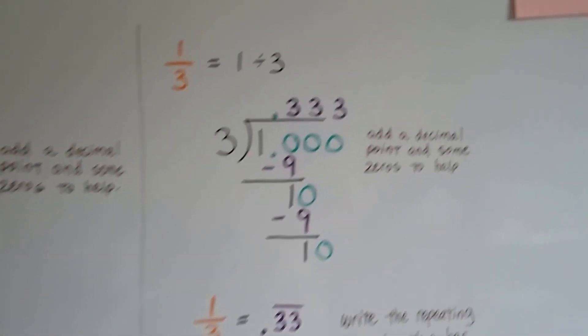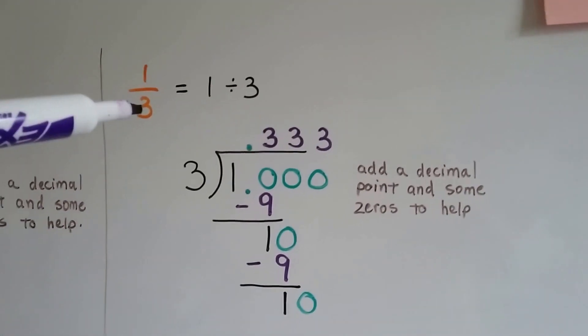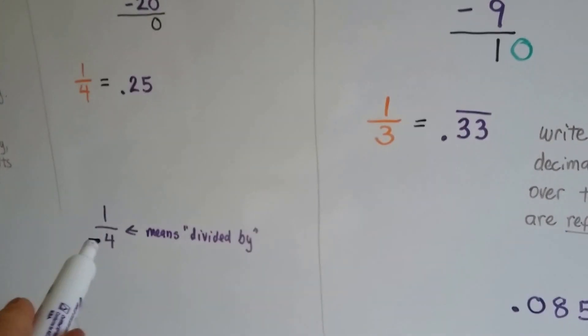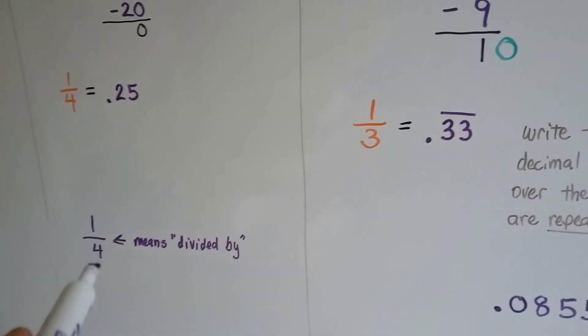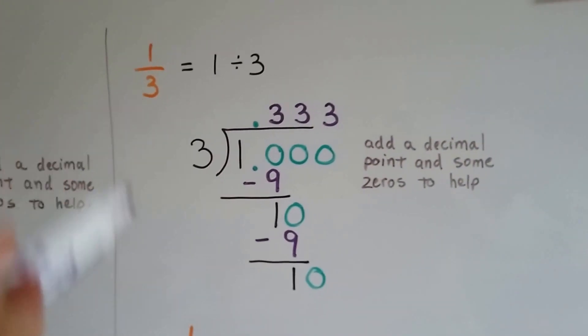Now, for 1/3, we say 1 divided by 3. We look at that bar right here as divided by. 1 divided by 4. 1 divided by 3.